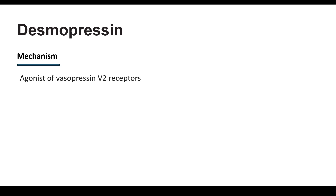Welcome to the class on vasopressin V2 receptor agonists. Under this we have desmopressin and vasopressin. The mechanism of desmopressin is that it is a vasopressin receptor agonist — specifically a V2 receptor agonist.